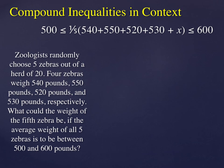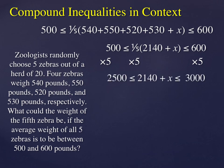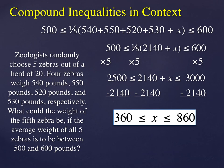We can combine like terms in the middle. And here, I could distribute the one-fifth to the parentheses, but I'd rather clear that fraction by multiplying by five. But I have to do that to all three sides. So I'm going to now multiply. And I'm going to subtract 2140 from all three sides. And my solution is here. 360 is less than or equal to x is less than or equal to 860. In other words, if the fifth zebra weighed between 360 and 860 pounds, then the average weight of all five of them would be between 500 and 600 pounds.